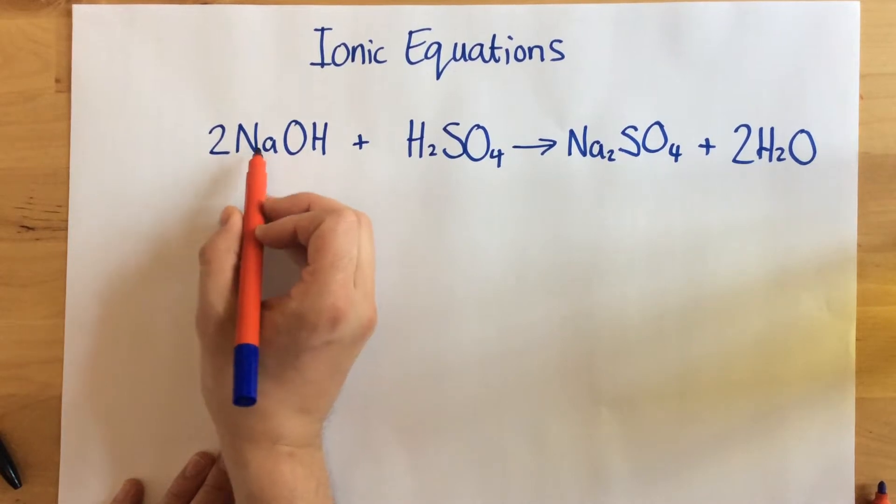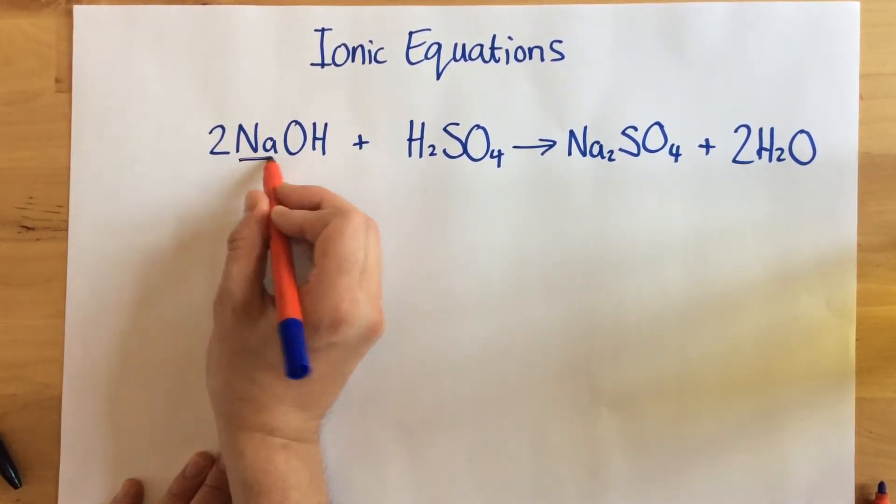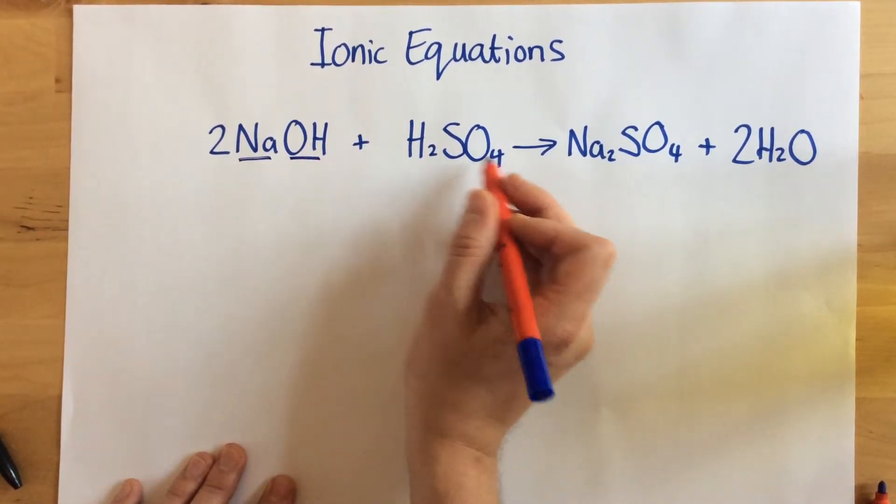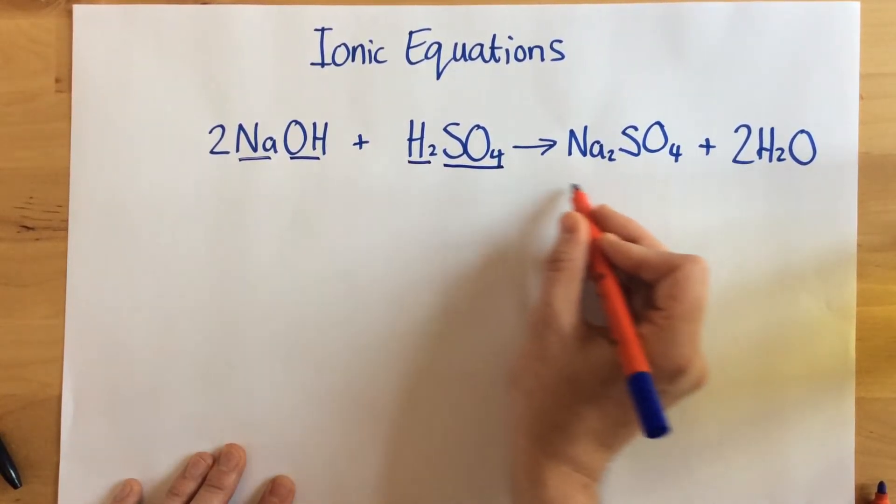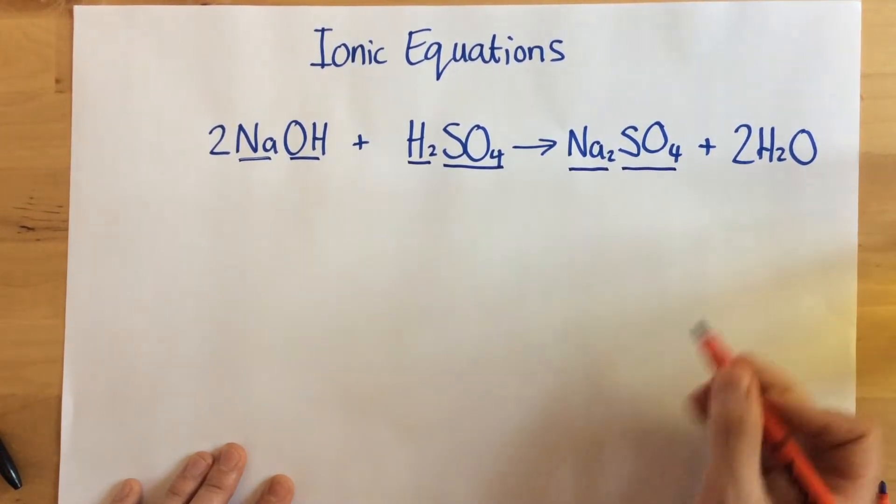So sodium hydroxide, it's going to form ionic bonds here. We're going to have sodium and hydroxide. We're going to have hydrogen ions and sulfate ions. We're going to have sodium ions and sulfate ions.